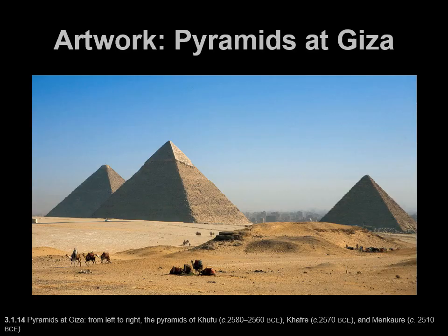Hopefully you recognize these — these are the pyramids at Giza, located on the west side of the Nile River. You can open up a map; it's actually pretty cool to look at them in satellite view. The pyramids are located in a type of funerary complex, so the whole area has temples, statues, pyramids, tombs, and different types of things associated with their funerary rituals.